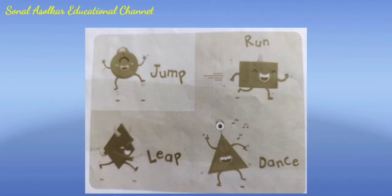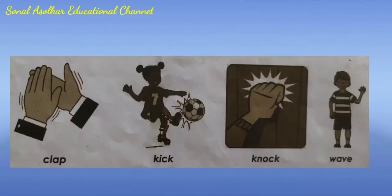Full-body movement words: Jump, Run, Leap, Dance. Sometimes we move only one or two parts of our bodies. These movements also have names: Clap, Kick, Knock, Wave.